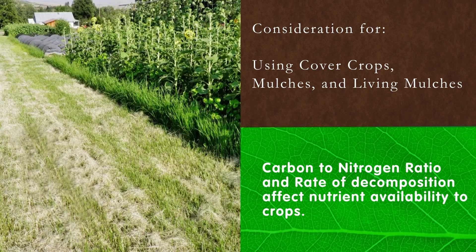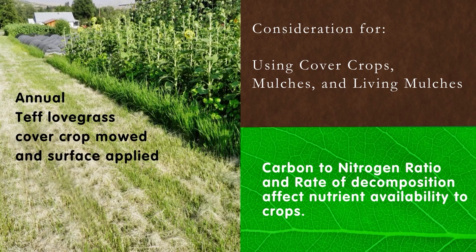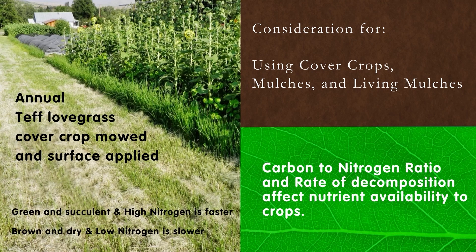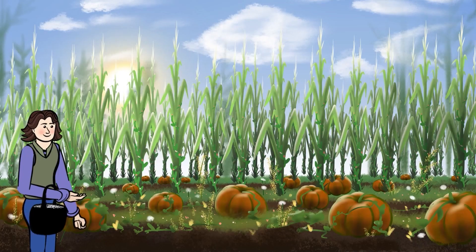On the left we have teff — it's an annual grass cover crop, mowed and surface-applied. How's that for carbon-to-nitrogen ratio? Higher carbon. Generally, green and succulent and high nitrogen is faster to decompose; generally brown and dry and low nitrogen is slower to decompose.